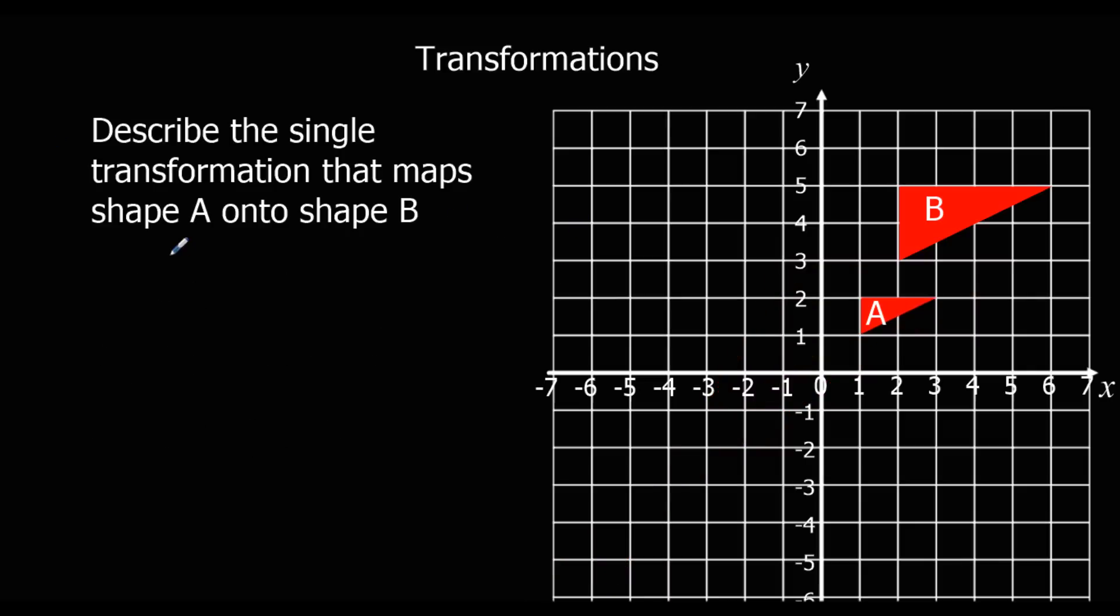Same for me again. So we've got another enlargement. We know that because the shape's got bigger or smaller. In this case it's bigger. It's got a scale factor. It was 1 up before. It's 2 up now. So the scale factor is 2. It's twice as big.